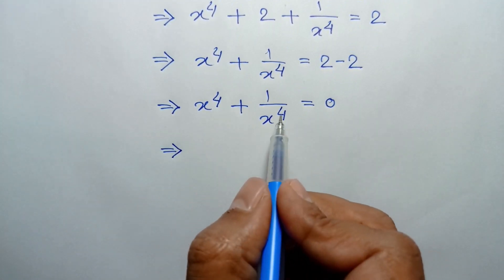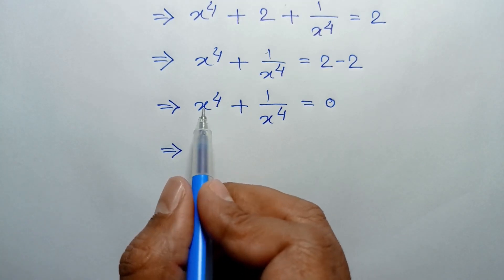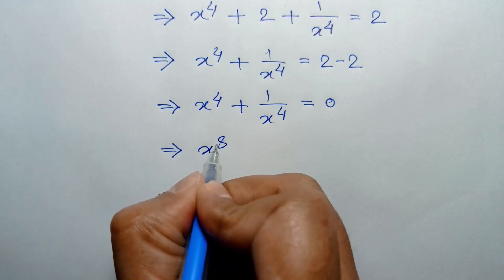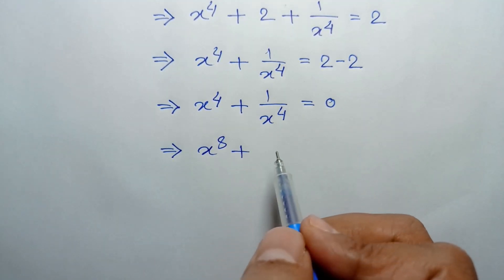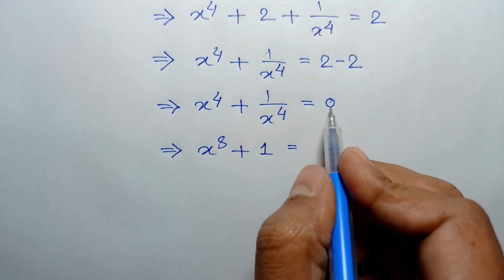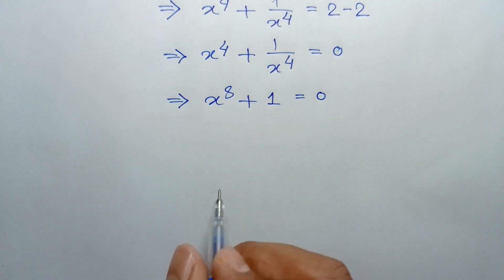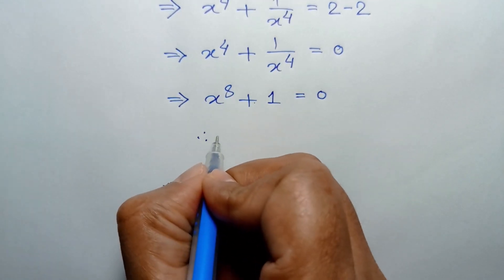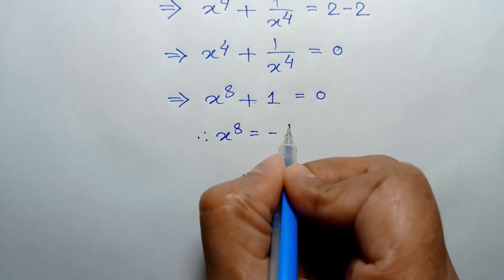Multiplying both sides by x to the power 4, we can write x to the power 4 times x to the power 4, which is x to the power 8, plus 1 over x to the power 4 times x to the power 4, which is 1, equals 0 times x to the power 4, which is 0. Taking 1 to the right side, we have the value of x to the power 8 is equal to negative 1.